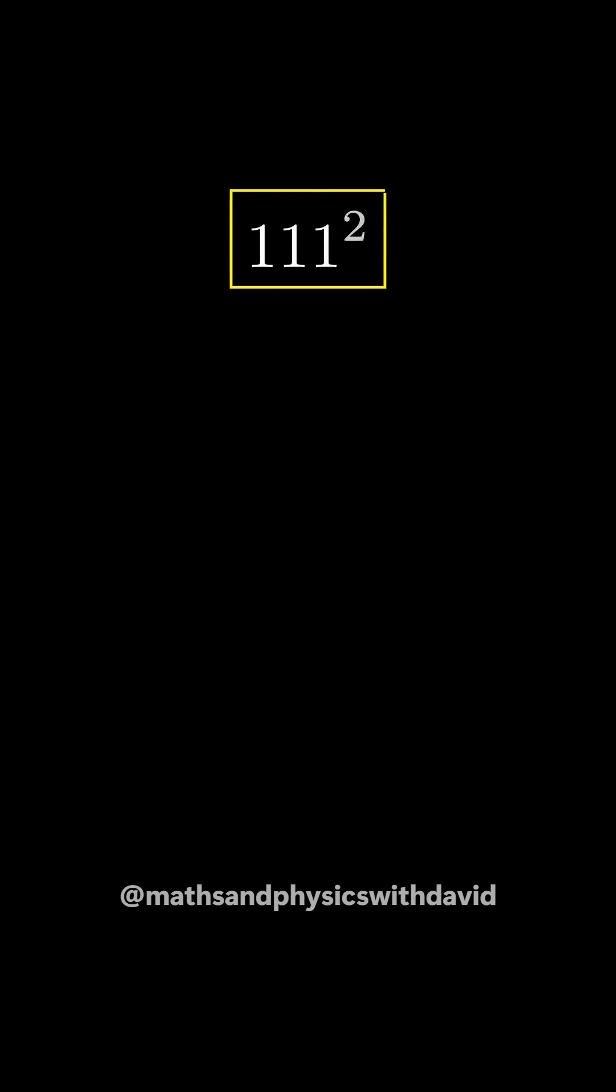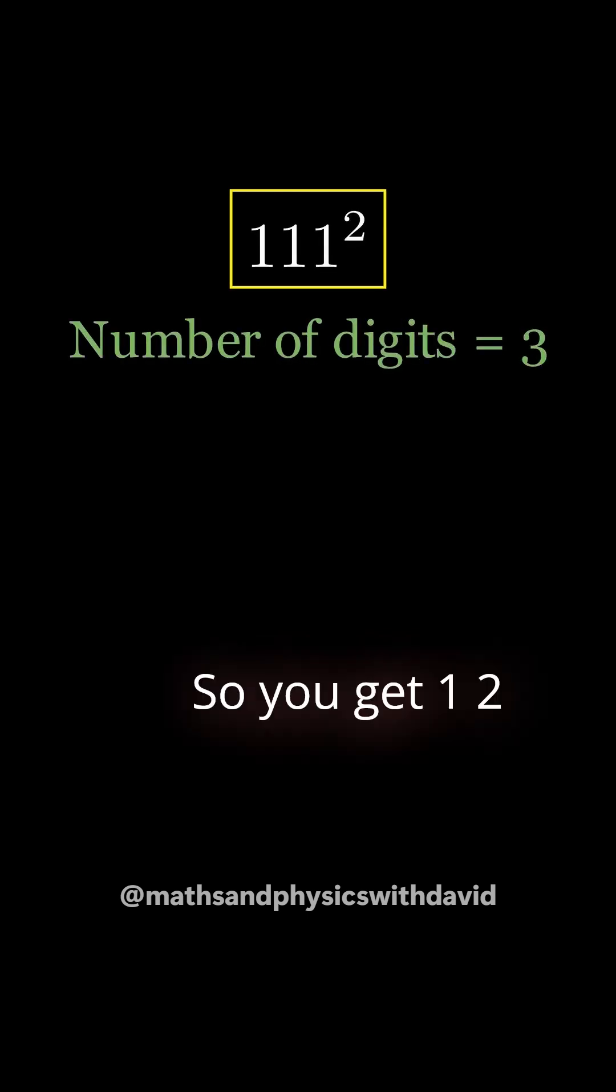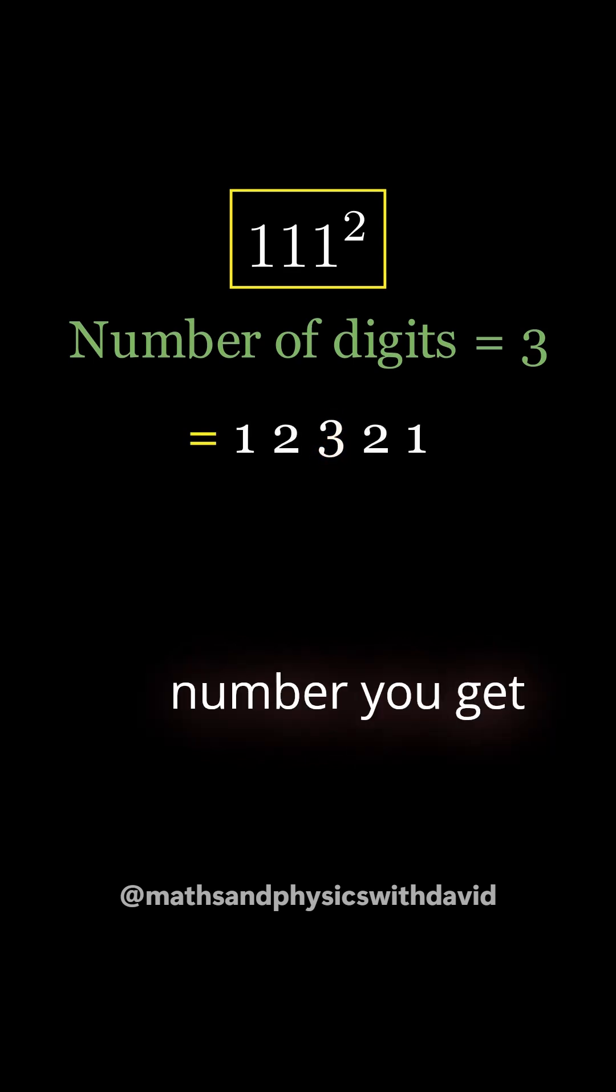For 111, there are 3 digits, so you get 1, 2, 3, 2, and 1. So the highest number you get is 3.